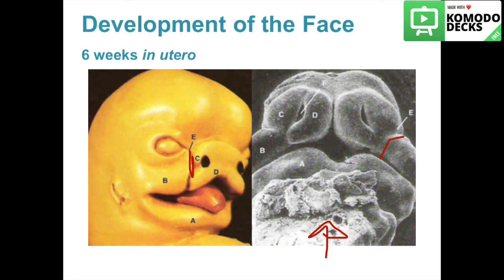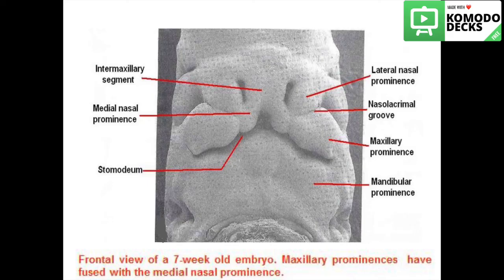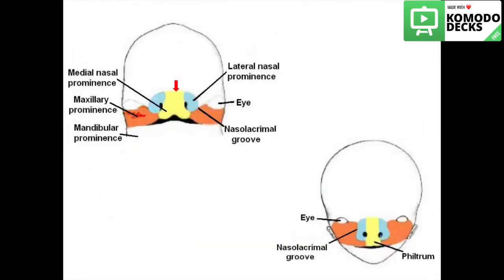This is a frontal view at the seventh week in utero. The medial nasal swellings enlarge and grow medially, then merge with each other in the midline to form the intermaxillary segment, as seen at the red arrow. The upper lip is formed by the maxillary processes outgrowing and meeting the medial nasal process in the midline, forming the philtrum of the upper lip. The philtrum is the middle third of the lip. So the upper lip is formed from the maxillary processes on each side together with the frontonasal process.